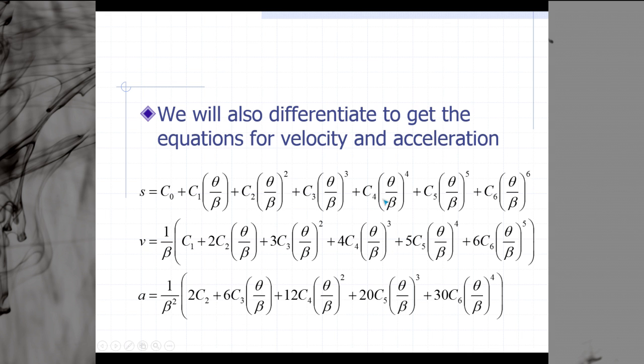We will also need to differentiate this position equation to get our equations for velocity and acceleration. We have our position equation shown here first, and our velocity is just a derivative of that. In this particular case, we are differentiating our position equation with respect to theta, not with respect to time. If our position equation is given in terms of inches, then our velocity will not be inches per second, but it will be inches per radian or inches per degree. The same is true with our acceleration function. Our acceleration function will be inches per radian squared or inches per degree squared.